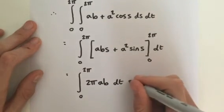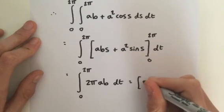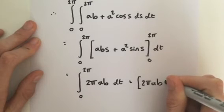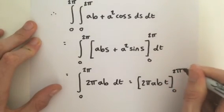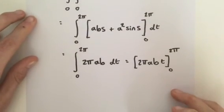And then finally, this is simply, you guessed it, 2πabt, evaluated from 0 to 2π. And this is the final step. We just need to evaluate.